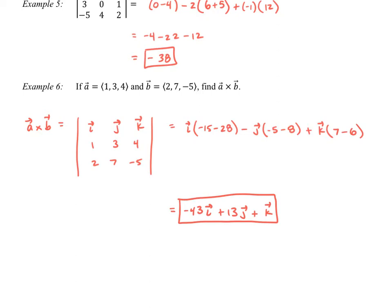If we were able to visualize this — which would be very difficult given the circumstances in space — we could visualize that and actually pinpoint exactly where that vector is located using the right-hand rule. Let's go on to the next page.